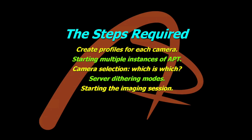Now you need to decide which camera is going to be the server and which will be the client. It's pretty simple: the one with the longest exposures should be the server. If they're both taking the same length exposures it doesn't really matter which is which. But if you have different length exposures, you want the longest-exposure camera as your server — that'll be your Camera One shortcut — and the shorter-exposure camera as your client, using the Camera Two shortcut.